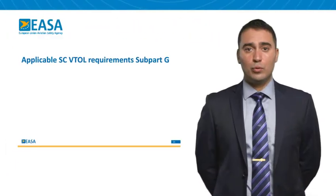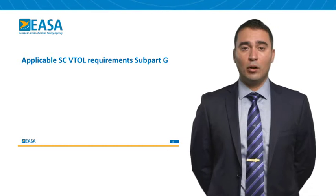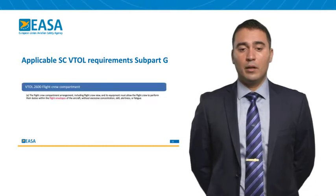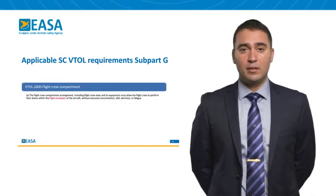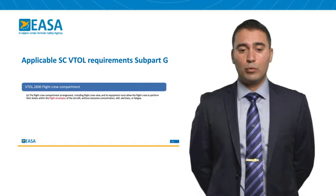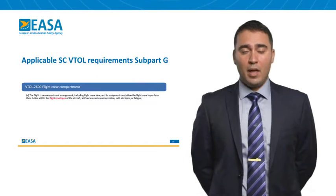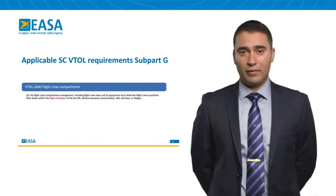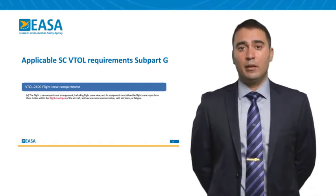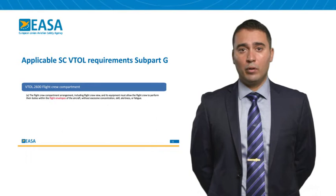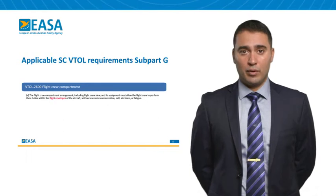In subpart Gulf, requirement 2600, flight crew compartment, also refers to flight envelopes, though only in a more general way.